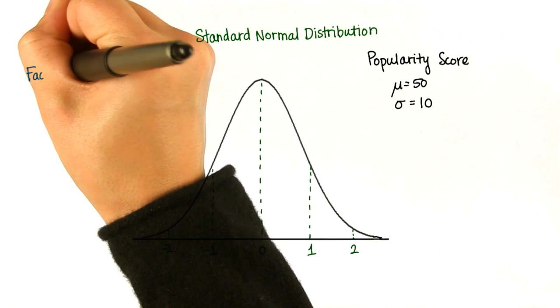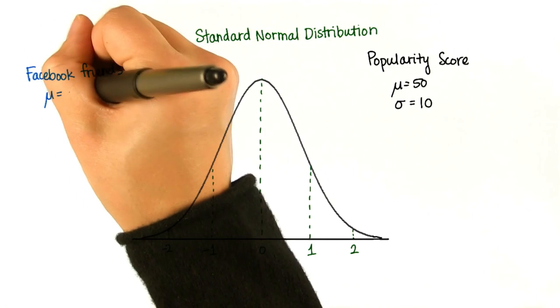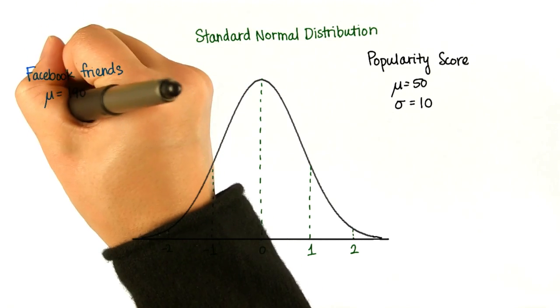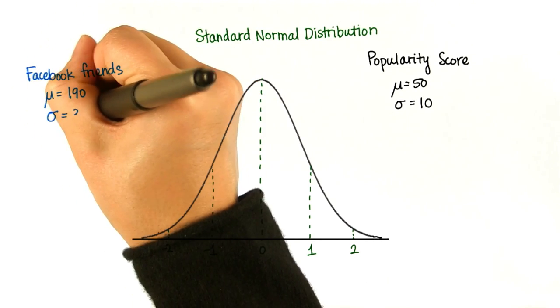We start with our original Facebook distribution, where the mean is 190, and the standard deviation is 36.